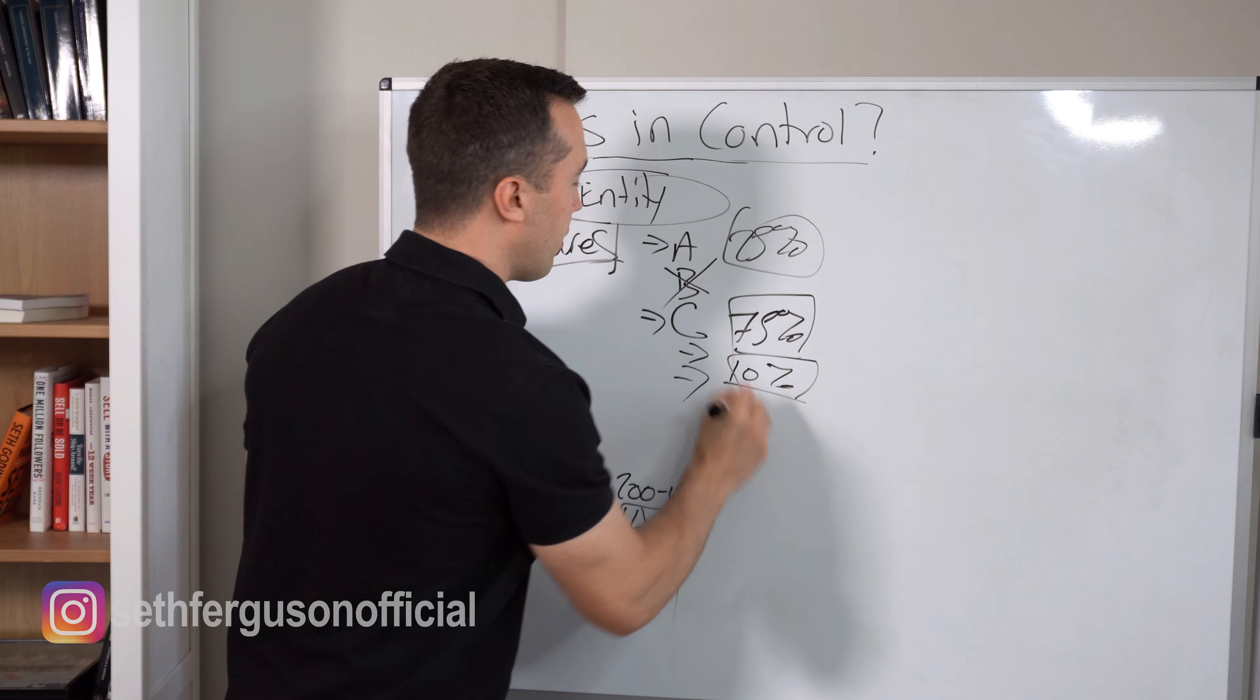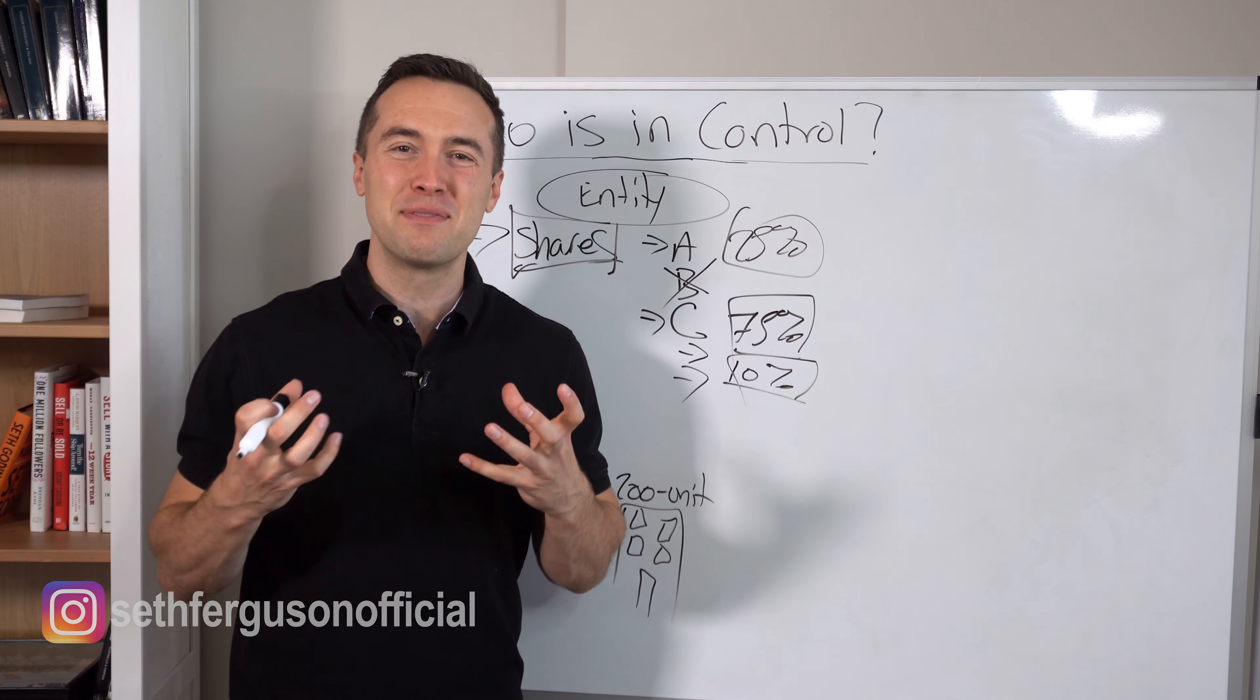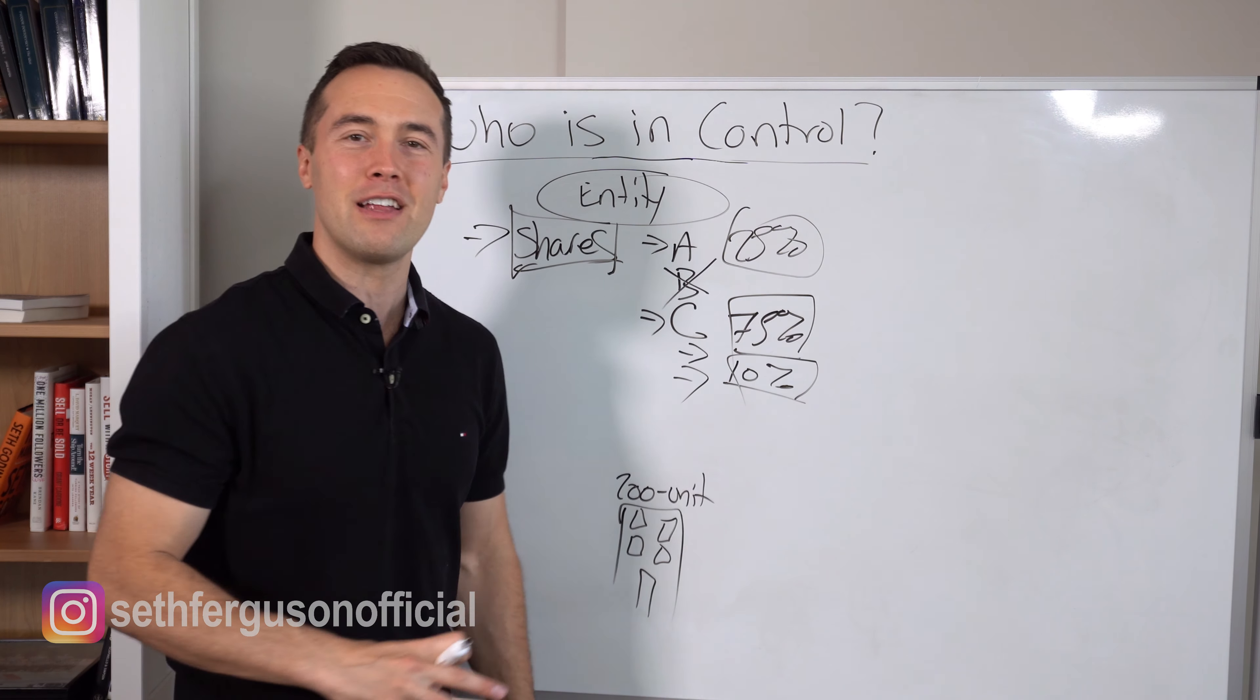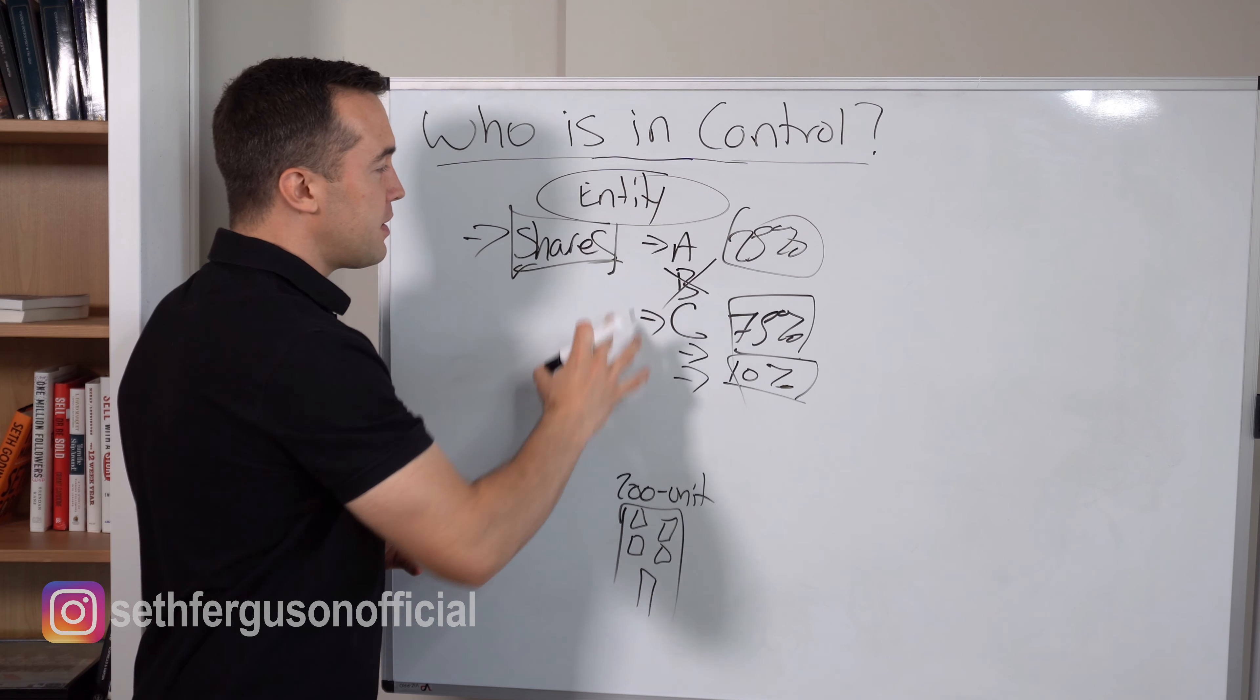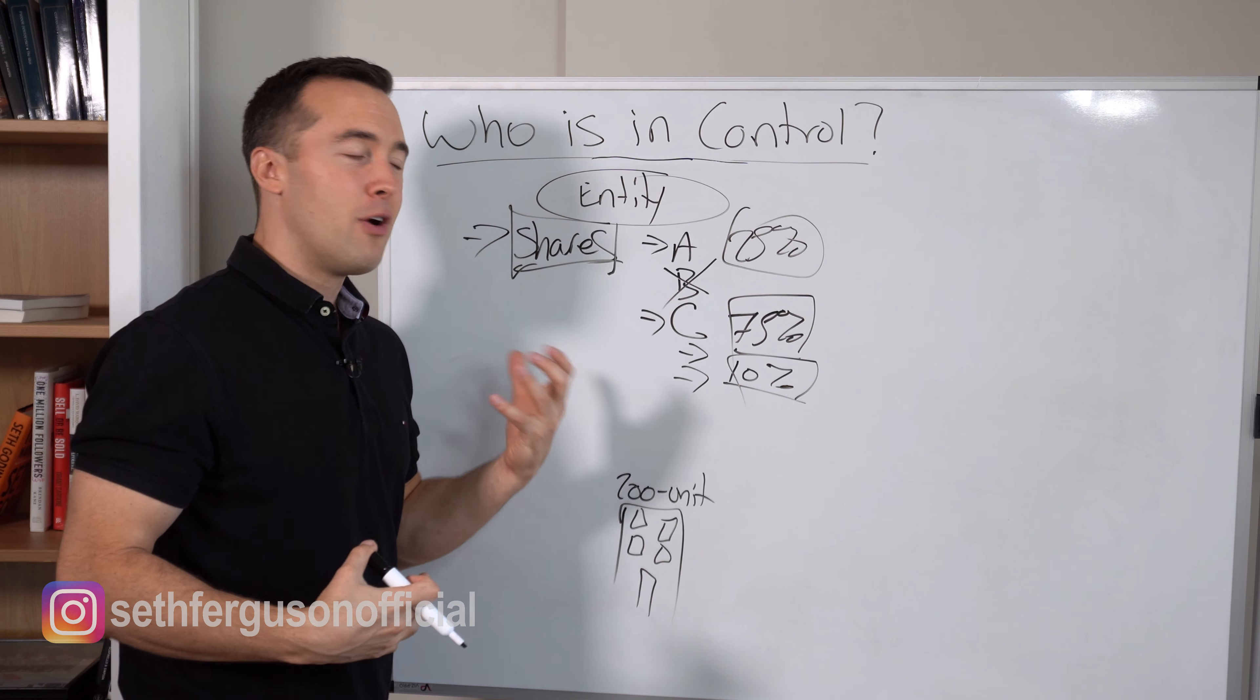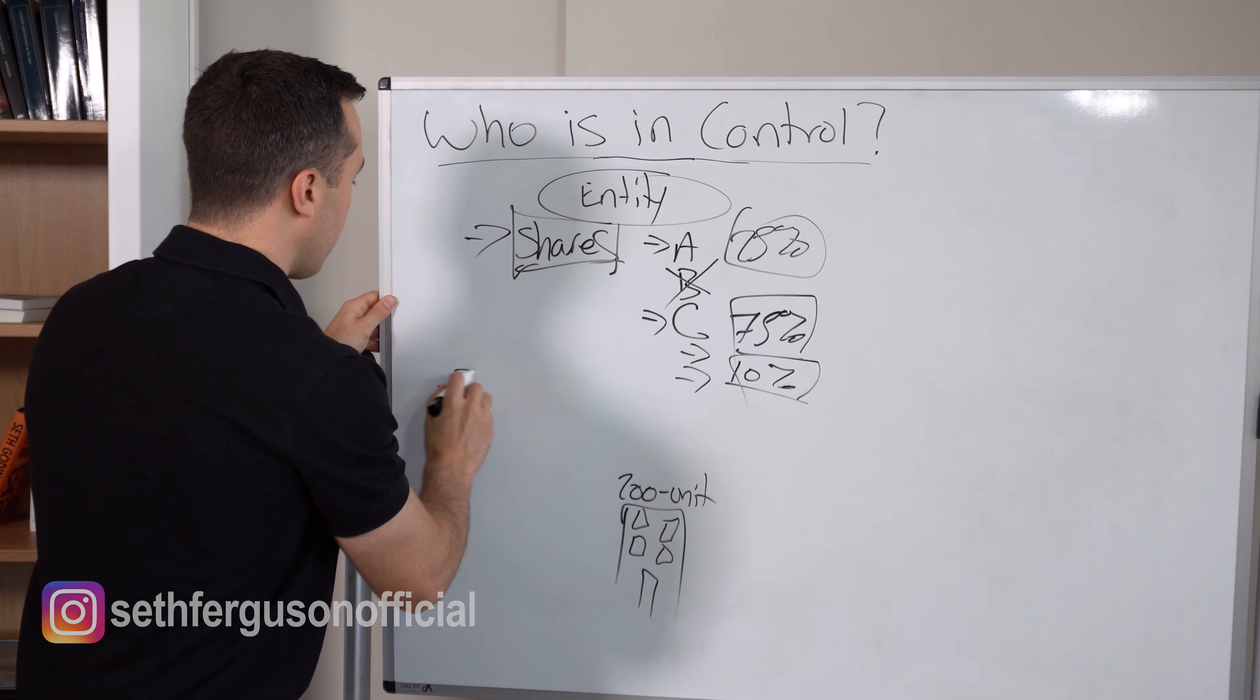This is why syndication is such a beautiful structure. It is made to raise large amounts of capital for these purposes and to really customize it and tailor it to the investors' needs and expectations. We know that we have different classes of shares that can be customized depending on the situation, but who gets to buy or purchase or acquire these different classes of shares?